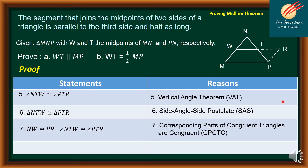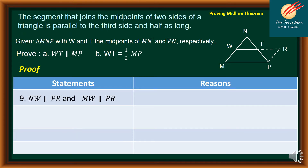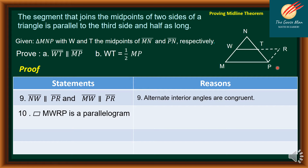Statement 8: since NW is equal to MW, then MW is equal to PR — reason is transitivity. Statement 9: NW is parallel to PR and MW is parallel to PR — reason is alternate interior angles are congruent. Take note that NW as well as MW are both parallel to PR. Statement 10: quadrilateral MWRP is a parallelogram — reason is a pair of opposite sides are both parallel and congruent.